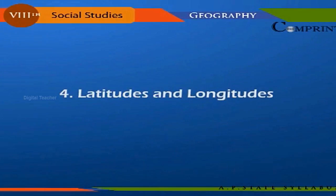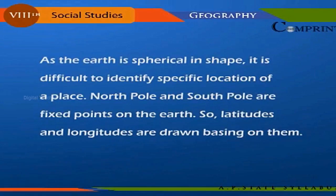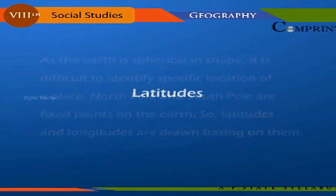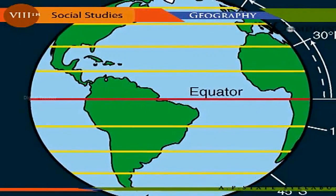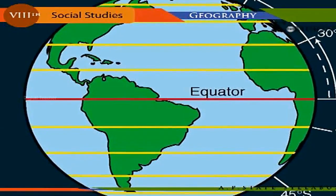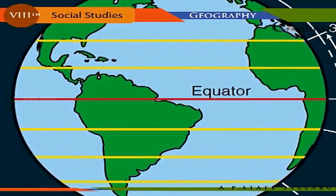Latitudes and longitudes: as the earth is spherical in shape, it is difficult to identify the specific location of a place. The north pole and south pole are fixed points on the earth, so latitudes and longitudes are drawn based on them. A circle drawn over the earth's surface exactly at equal distances from the north pole and south pole is called the equator.